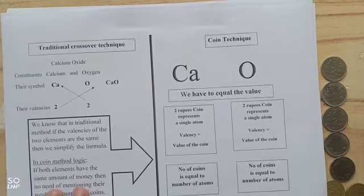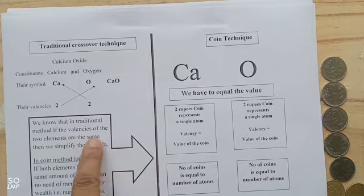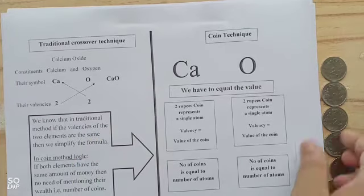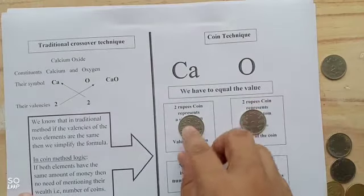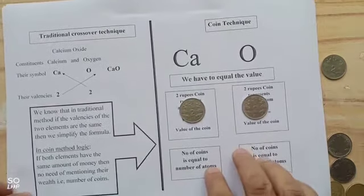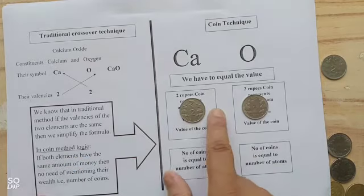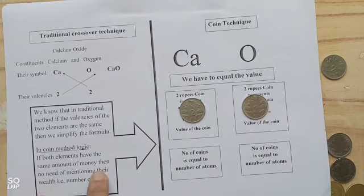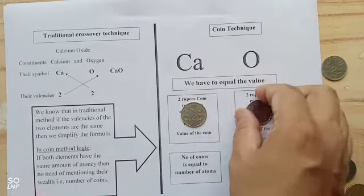Calcium oxide: the valency of calcium is 2, and oxygen is 2. In the traditional method, if the valencies of the two elements are the same, we simplify the formula. In my technique, the concept is the same. One 2 rupees coin represents calcium, another 2 rupees coin represents oxygen. In the coin method logic, if both elements have the same amount of money—2 rupees, 2 rupees—then there's no need to mention their wealth, meaning the number of coins. So we don't write any number there.